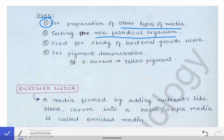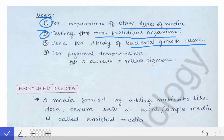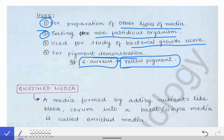Third use of simple media is that it is used for studying the bacterial growth curve — a very important topic from the university exam point of view. Fourth, it can be used for pigment demonstration. For example, Staphylococcus aureus produces a yellow-colored pigment which can be easily demonstrated on nutrient agar. These are all the different uses of simple media, which may be asked in vivas or practical exams.